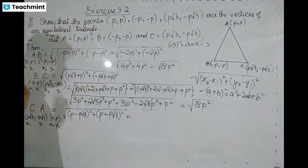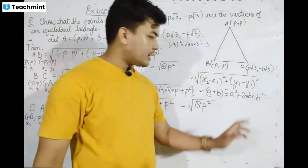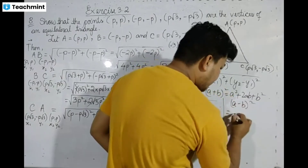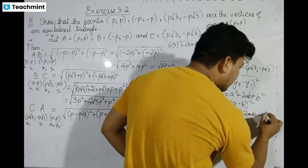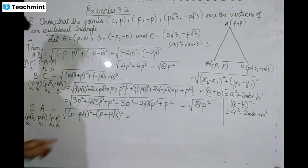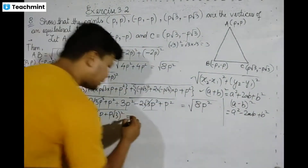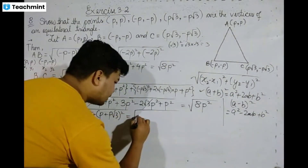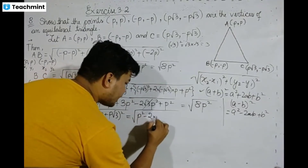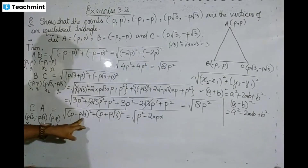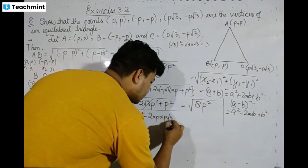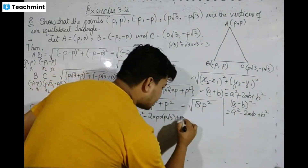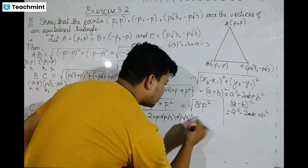Using (a minus b) whole square: a squared minus 2ab plus b squared. So a is p, a squared is p squared, minus 2 times ab, plus b squared — where b is p√3. So p squared plus (p√3) whole square gives p squared plus 3p squared.